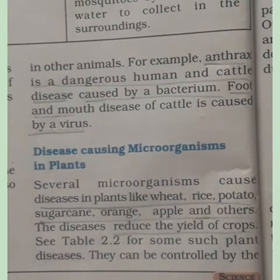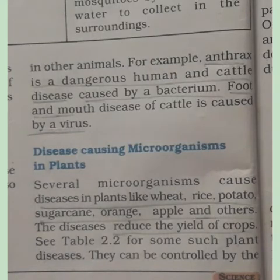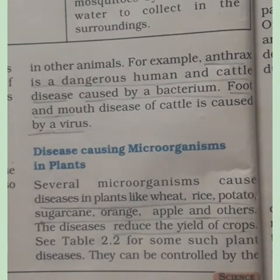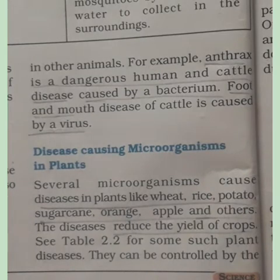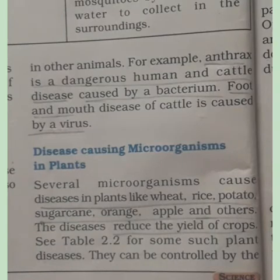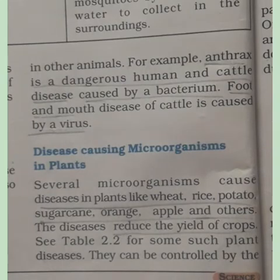Some plant diseases include citrus canker, caused by bacteria; rust of wheat, caused by fungus; and yellow mosaic disease, caused by a virus. These plant diseases can be controlled by the use of certain chemicals.